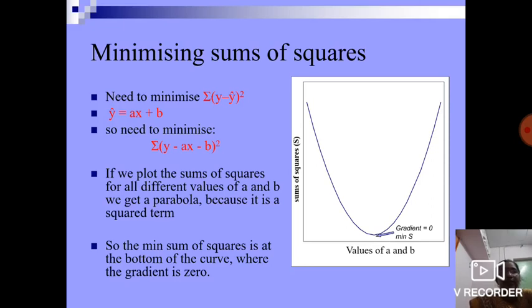Minimizing sum of squares. Need to minimize summation (y minus ŷ) squared. Already we know that ŷ equals Ax plus B. So need to minimize summation (y minus Ax minus B) squared. If we plot the sum of squares for all different values of A and B, we get a parabola because it is a squared term. So the minimum sum of squares is at the bottom of the curve where the gradient is 0.